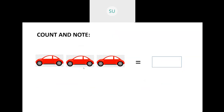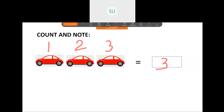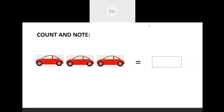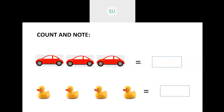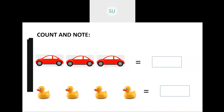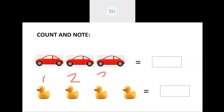Then we did counting. How many cars are there here? Let's count: 1, 2, 3. So we have 3 cars and we write 3. Then how many ducks are there? We have 1, 2, 3 and 4. So 4 ducks.